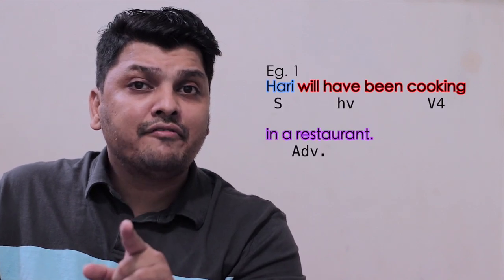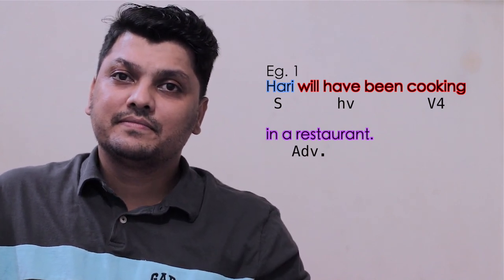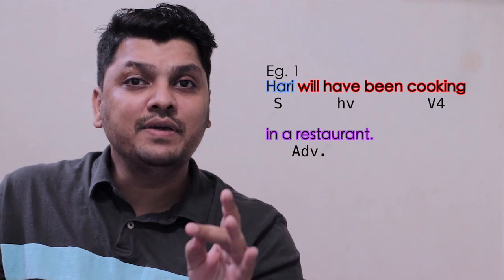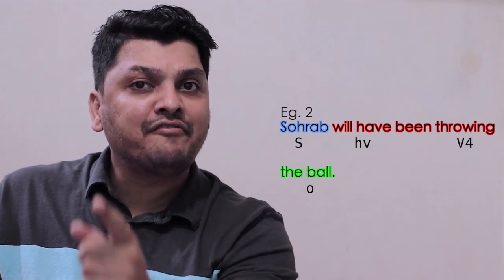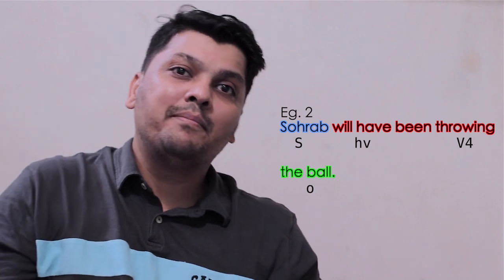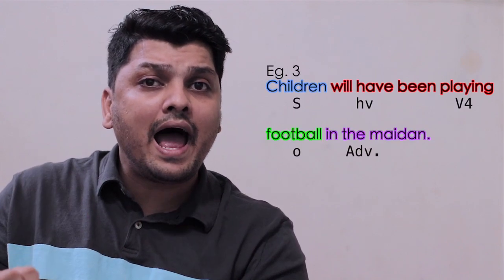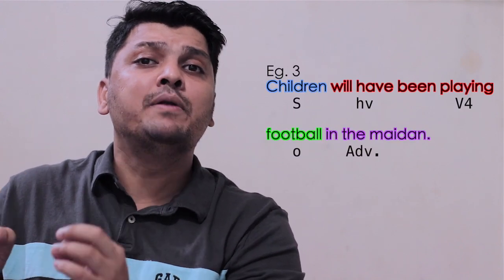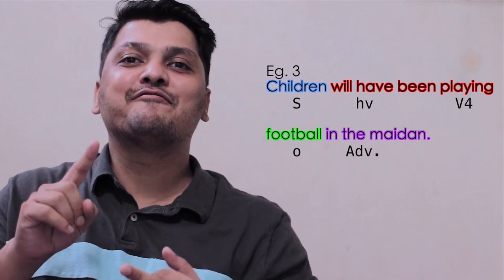Examples of future perfect continuous: Hari will have been cooking. Second: Saurabh will have been throwing the ball. Third: Children will have been playing football in the maidan. The key pattern to keep in mind is will + have + been + ing.